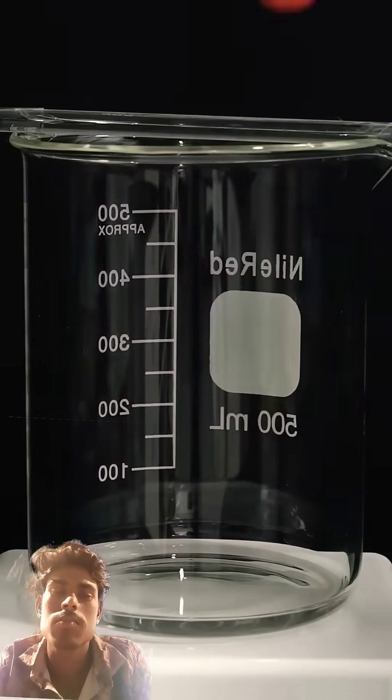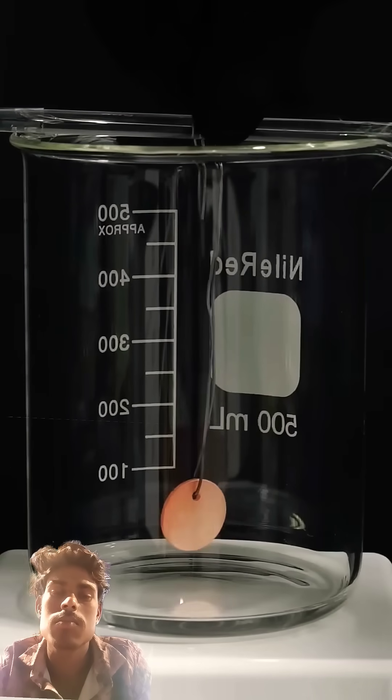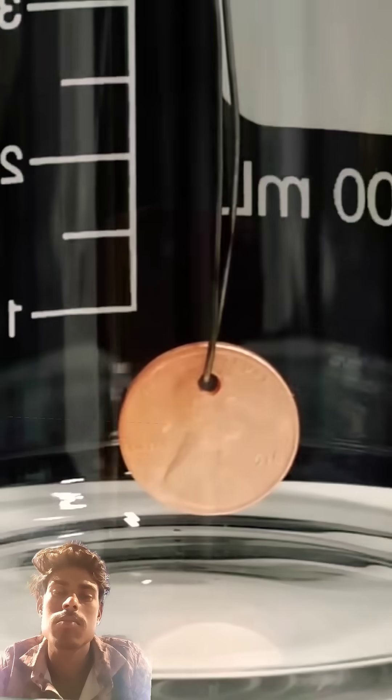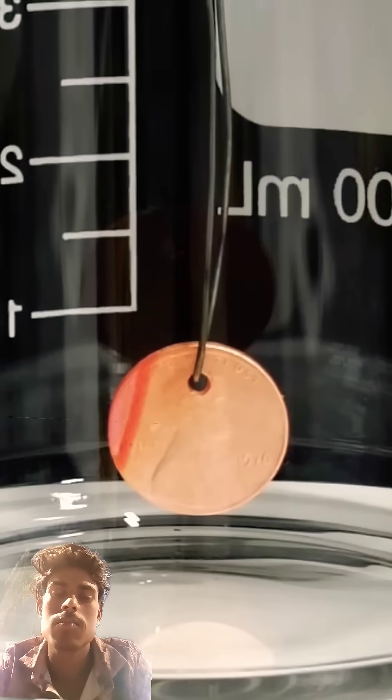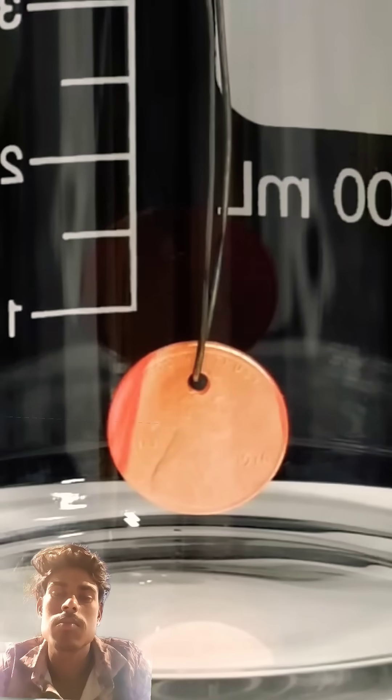Then, I can lower it into the beaker and hold it just slightly above the acetone. At first, it didn't look like much was happening, but then the edges started turning red. This was happening because the hot copper in the penny was catalyzing a reaction between the acetone vapors.